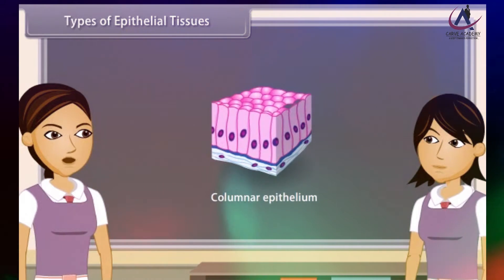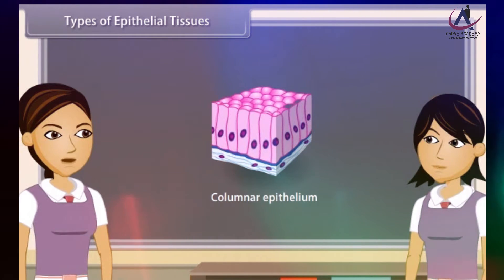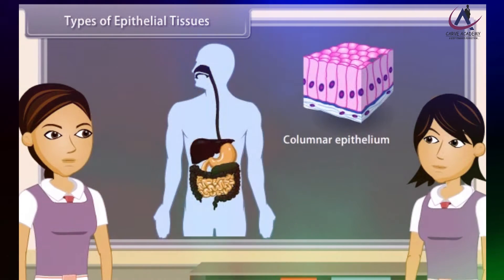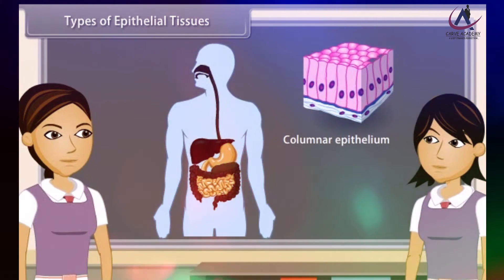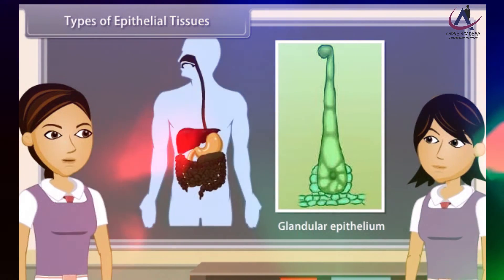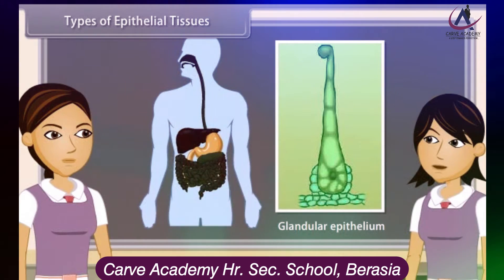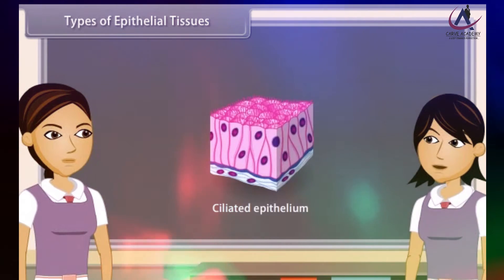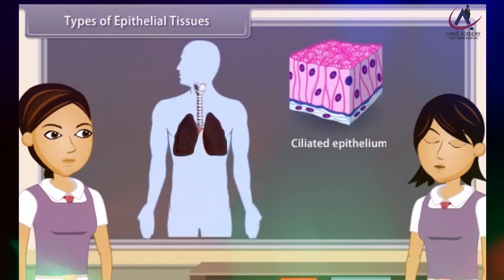Columnar epithelium consists of cells which are pillar-like in appearance because they are taller than broader. Their nuclei are at the base. It is found in the lining of stomach, small intestine, colon, gallbladder and oviducts forming mucous membrane. The columnar epithelium is sometimes modified to form glands which secrete certain chemicals, converting it into glandular epithelium, found in the mucous membrane of stomach, sweat and oil glands. Some cuboidal or columnar cells have a free border bearing thread-like cytoplasmic outgrowths known as cilia, forming ciliated epithelium, found in sperm ducts, trachea, bronchi, kidney tubules and oviducts.